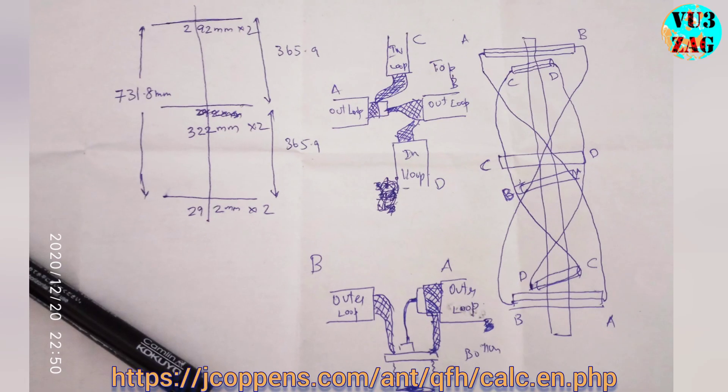The QFH antenna consists of two coaxial loops. The diagram here shows how to make the connectivity between the two loops.